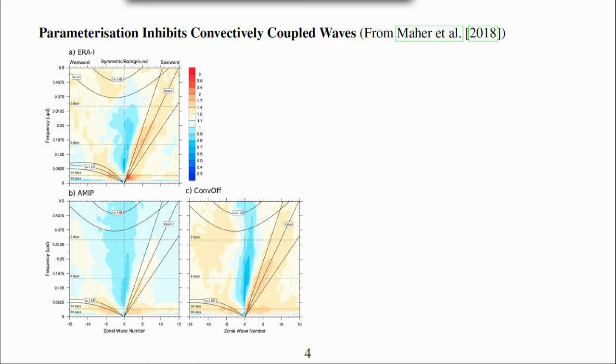Coupling of convection with planetary waves involves coupling of the large scale upper level divergence with the vertical motion in convection. This will not be represented accurately if convection does not transport mass vertically.